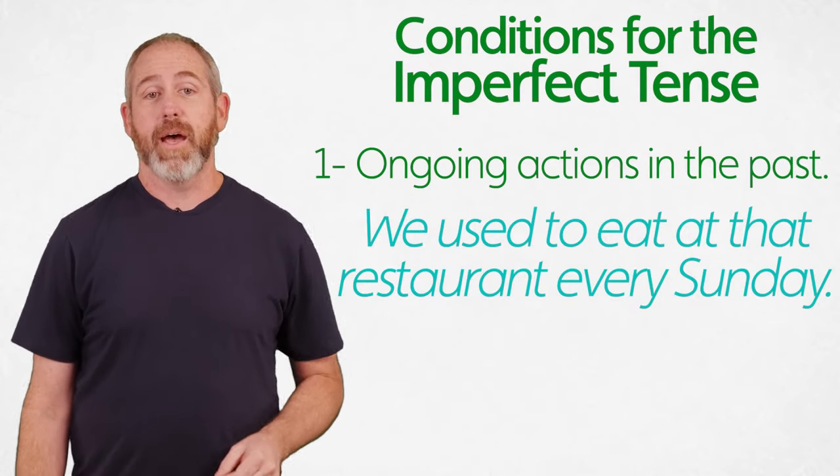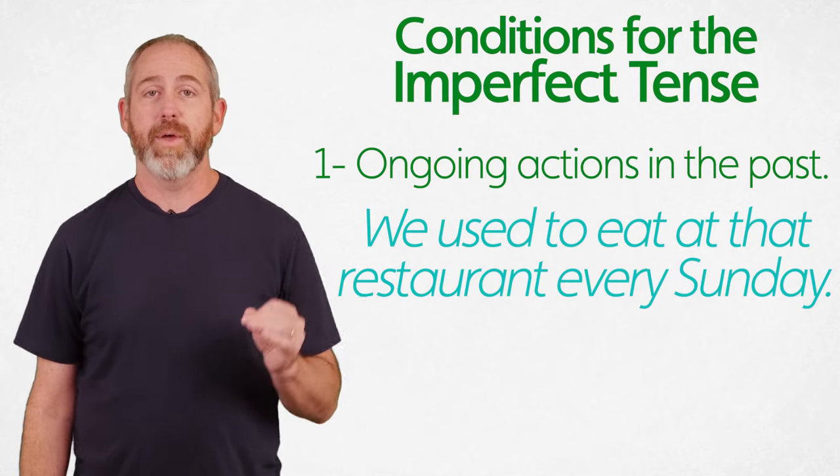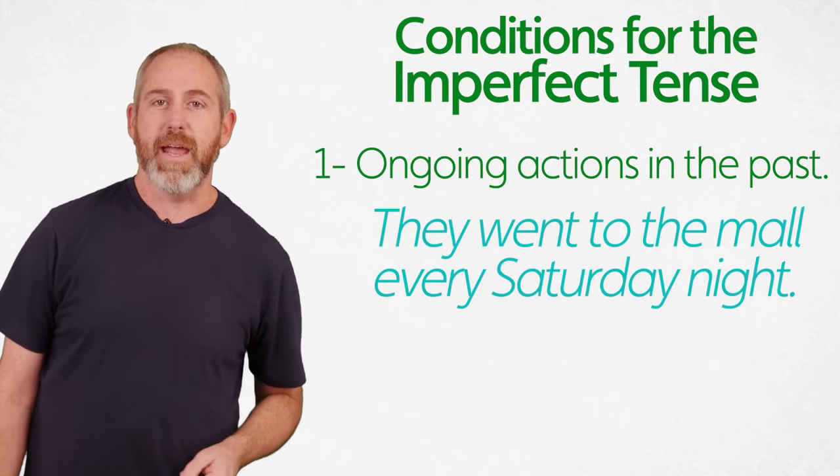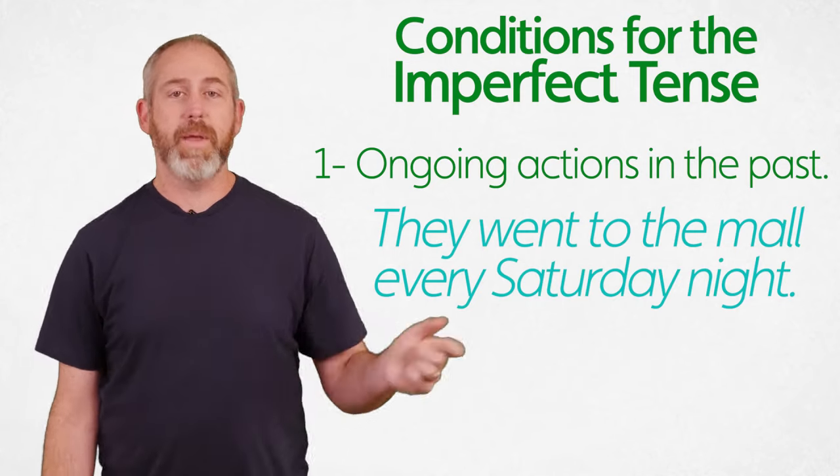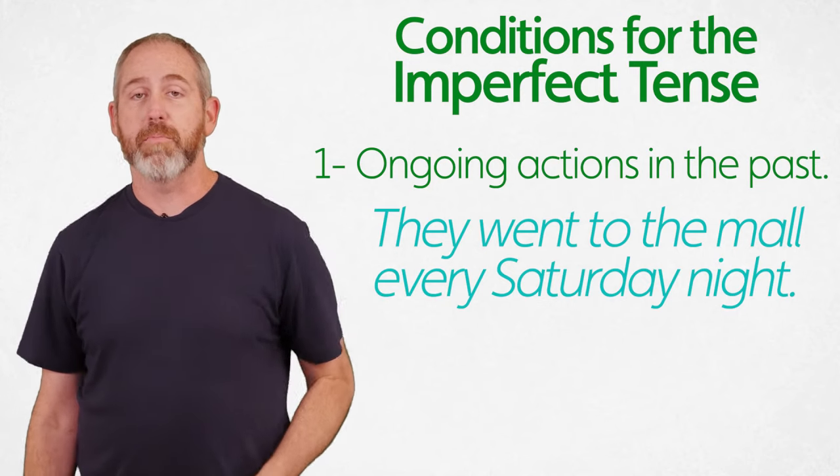So we used to eat at that restaurant every Sunday. That would be habitual, ongoing, repeated action. They went to the mall every Saturday night. See, that's a habitual, repeated action. So that would be the imperfect tense.